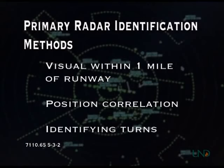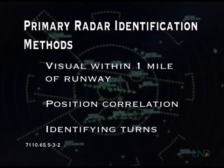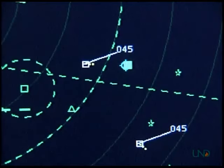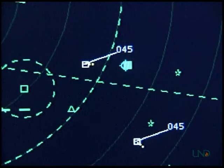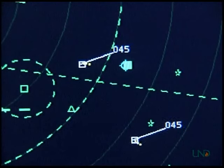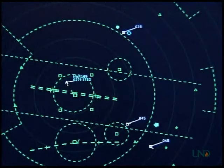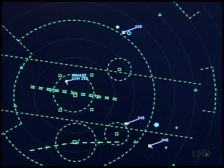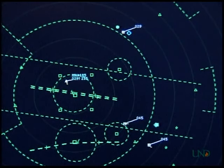Any of these three methods can be used to radar identify a target. However, if at any time you are uncertain of a target's identity, you must use more than one method. For example, if you receive a position report but several aircraft are in the vicinity of the fix or reporting point, you can issue an identifying turn or more than one identifying turn to ensure you are identifying the correct target. When in doubt, always err on the side of caution.